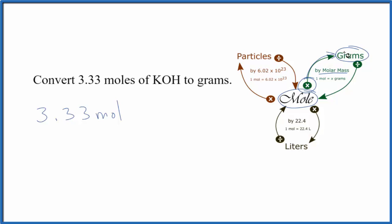So we're going to go from moles to grams. We're going to multiply by the molar mass of potassium hydroxide. That turns out to be 56.11, and the units are grams per mole.